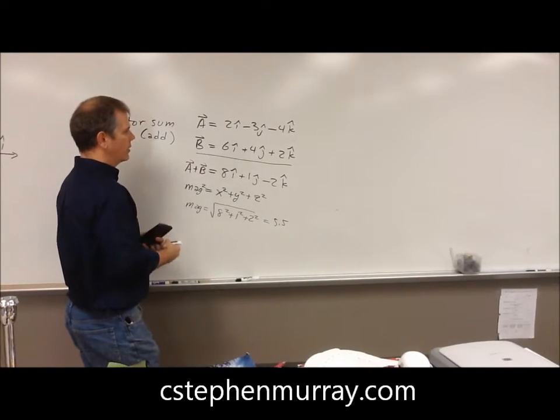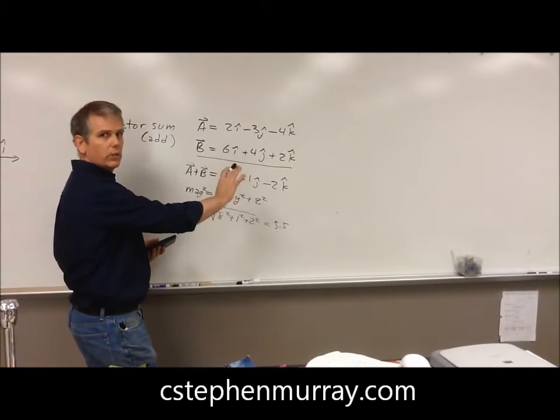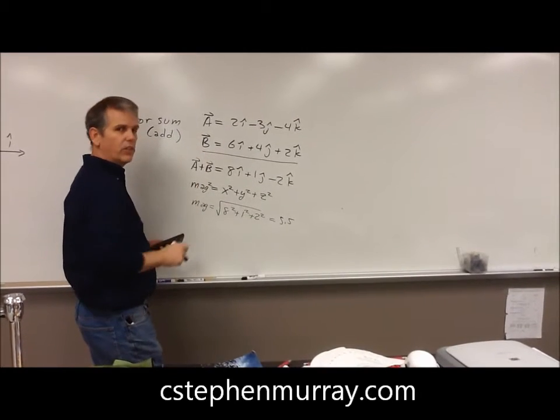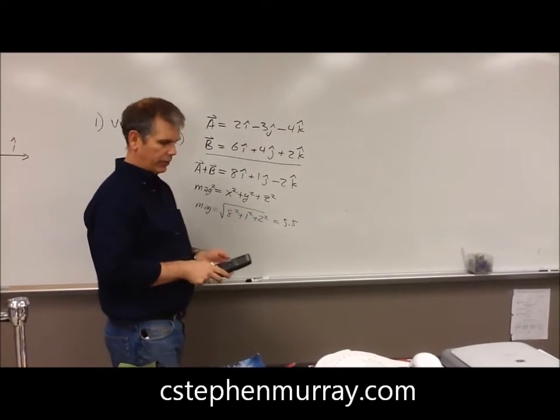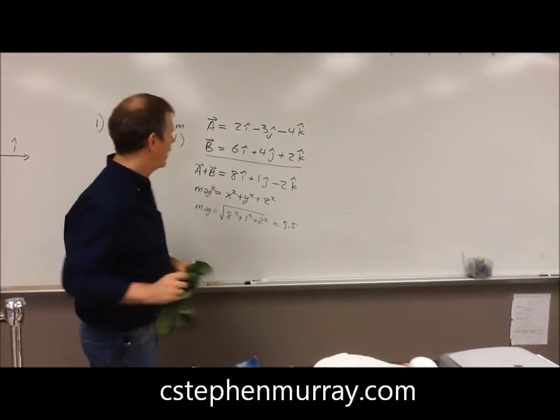Now what about units? If these were all meters, then that would have the units of meters. If they had different units, you couldn't add them together. All right, that's how you do a vector sum.